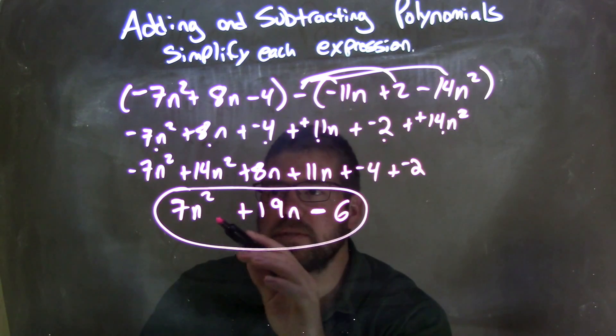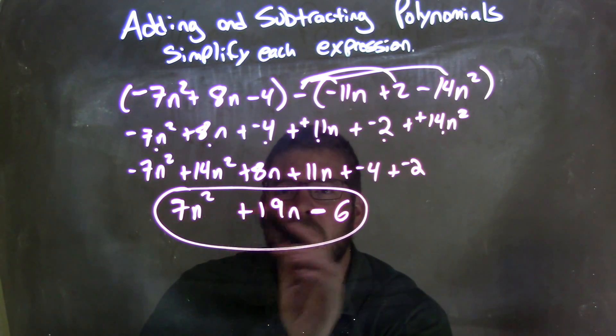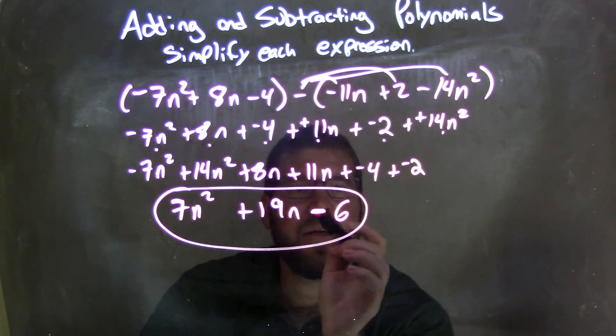Then I combined my like terms, giving me a positive 7n squared here, 19n, and then subtracting 6, so my final answer here is 7n squared plus 19n minus 6.